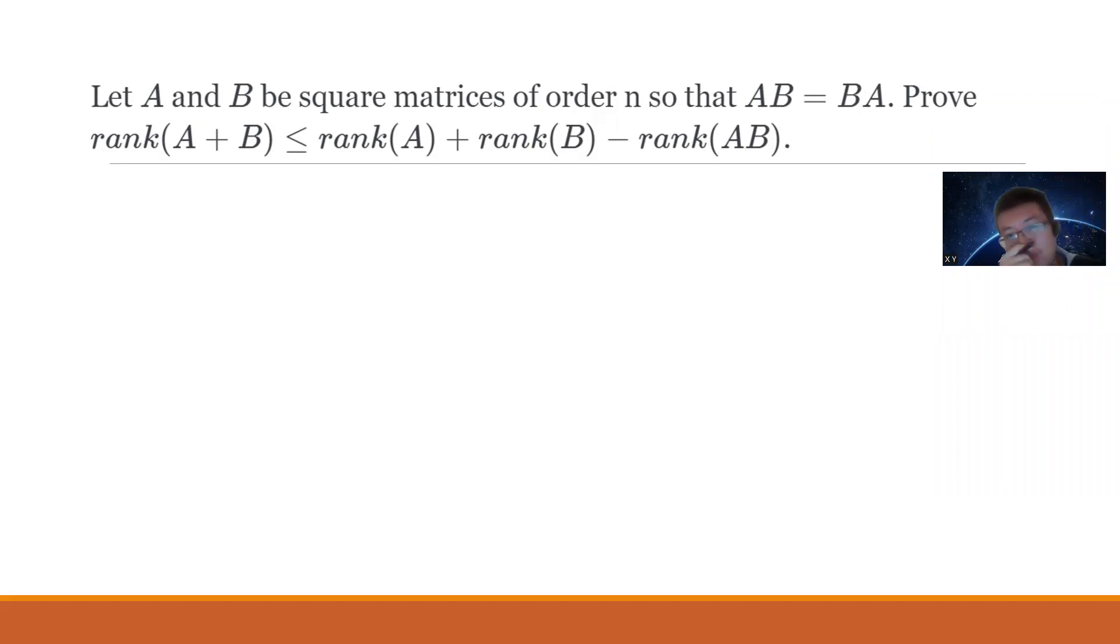The proof is that if A, B are square matrices of order n, basically n by n matrices, and AB equals BA, prove that rank(A + B) is less than or equal to rank(A) plus rank(B) minus rank(AB).